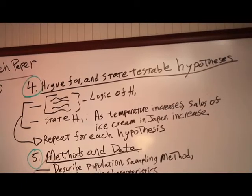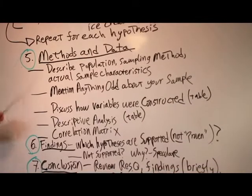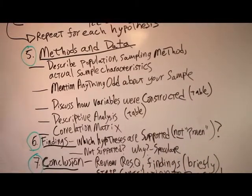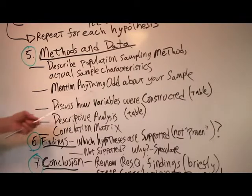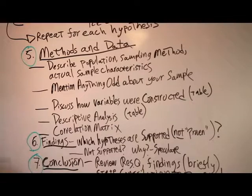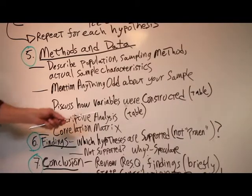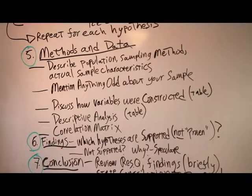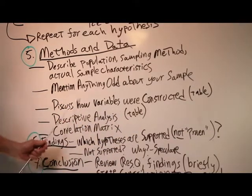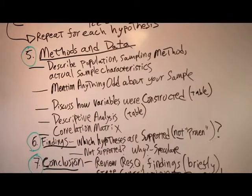Now let's talk about the next section, which is the methods and the data. Here you describe the population, the sampling methods, and the actual sample characteristics. You mention anything odd or strange or unique about your sample that might be an issue. You discuss how your variables were constructed, and this is a table. Then you present your descriptive analysis table, and then you present your correlation matrix. If there's any problematically high correlations, you mention those. I have videos on the variable construction table, the descriptive analysis table, and the correlation matrix table.